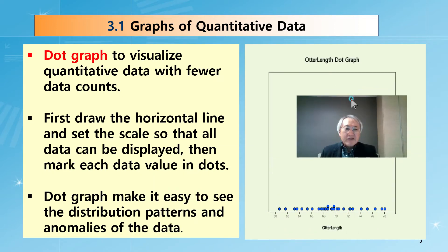Here's an example of a dot graph. A dot graph is to visualize quantitative data with fewer data counts. If there are so many data, it's not easy to plot, it's not easy to distinguish.